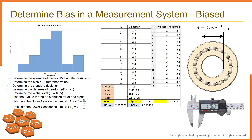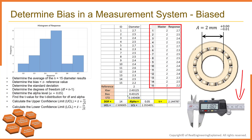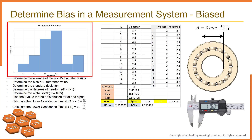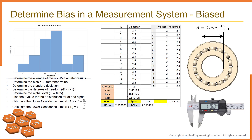Now the engineer runs a sample bearing with a 2 millimeter internal diameter 15 times with another caliper and records the results in Excel. The histogram shows that the diameter results are spread out in a pattern that indicates bias is present in the measurement system. To further confirm this, the engineer constructs a 95 percent confidence interval. If the confidence interval does not include the reference value of 2 millimeters, the engineer can assume there is evidence of bias being present.